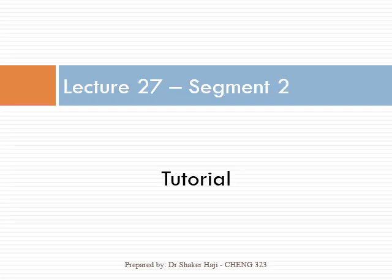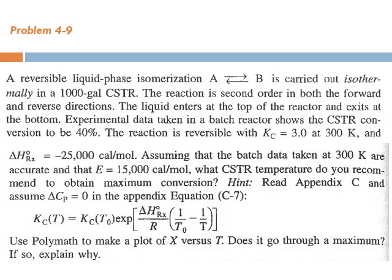Let's continue with segment number two, which is basically a tutorial. We're going to talk about problem 4-9, where we have a reversible liquid-phase isomerization A goes to B carried out isothermally in a 1000-gallon CSTR. The reaction is second order in both the forward and reverse directions. The liquid enters at the top of the reactor and exits at the bottom.